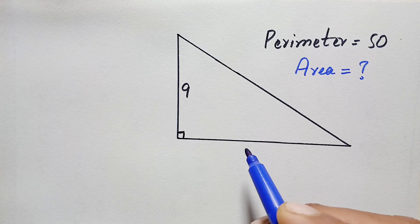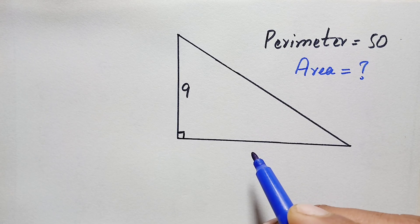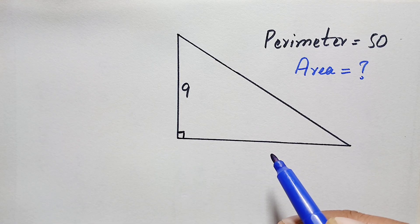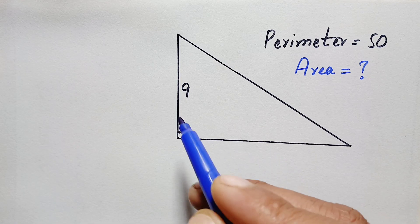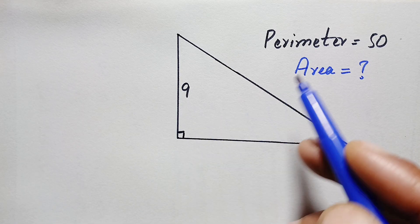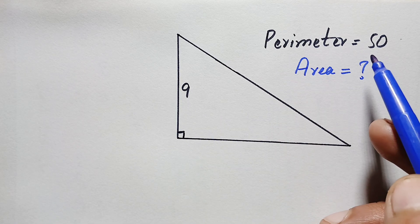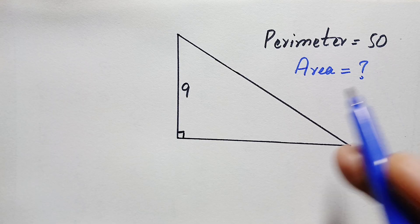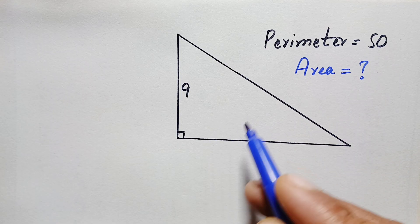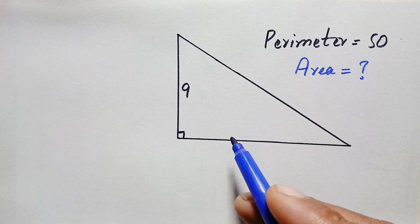Hello everyone, you are welcome. Today we have a very beautiful geometry math problem. Here we have a right angle triangle with its height of 9 units and its perimeter of 15 units. Our target is to find out the area of this right angle triangle.